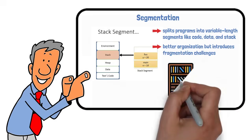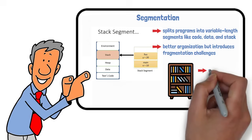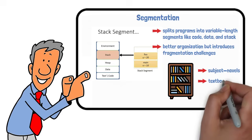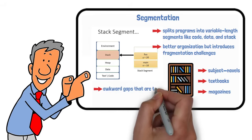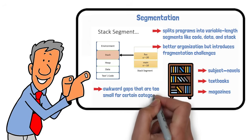Imagine organizing a bookshelf where you group books by subject: novels, textbooks, magazines, each taking different amounts of space. It makes logical sense and helps you find things. But as you add and remove books, you might end up with awkward gaps that are too small for certain categories.